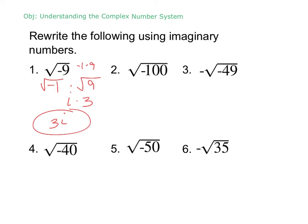You don't really have to break it up every time. We can just say, okay, what's the square root of 100? 10. And then we have a negative under the square root, so that gives us our i. Number 3, same idea. 7i, but then we have that negative in front, so it's negative 7i.